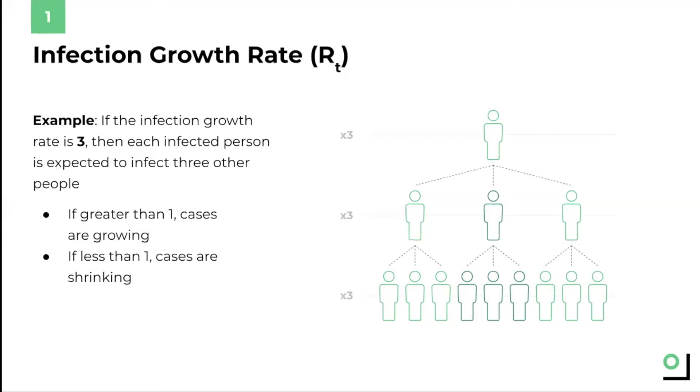Eventually, nine becomes 27 and then 81 and so forth as the pattern continues. This is known as exponential growth, which is when the larger the value, the faster it grows. This is different from linear growth, which is constant no matter the value. Exponential growth is a key reason why infectious diseases like COVID are so dangerous since the more people have it, the faster it spreads.